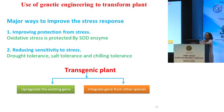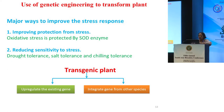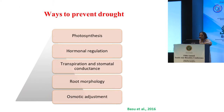Major ways to improve stress response through the engineering approach are: either you improve protection from stress — for example oxidative stress is protected by the SOD enzyme — or you reduce the sensitivity to stress. If you can't provide complete protection, you can reduce sensitivity, which is essentially drought tolerance, salt tolerance, and chilling tolerance, by upregulating the existing gene or integrating a gene from another species. For this, of course, one has to know what genes to address.